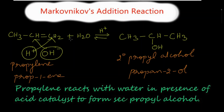Propylene reacts with water in the presence of an acid catalyst. Here, this H⁺ will be attached to the CH₂ carbon — the first carbon — and this OH group will be attached to the second carbon. We get CH₃–CH(OH)–CH₃. The name of this compound is secondary propyl alcohol. Thank you.